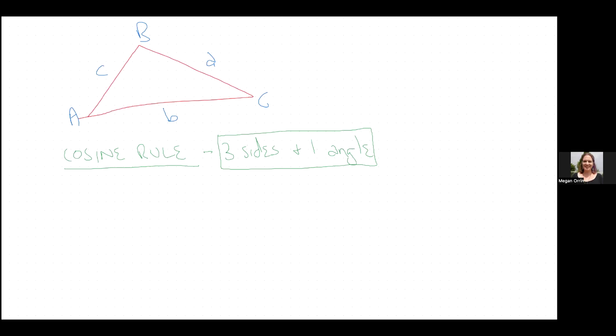Your cosine rule looks like this: a² equals b² plus c² minus 2bc times cosine A. Now that looks complicated, but literally you just type this into your calculator and I'll show you.